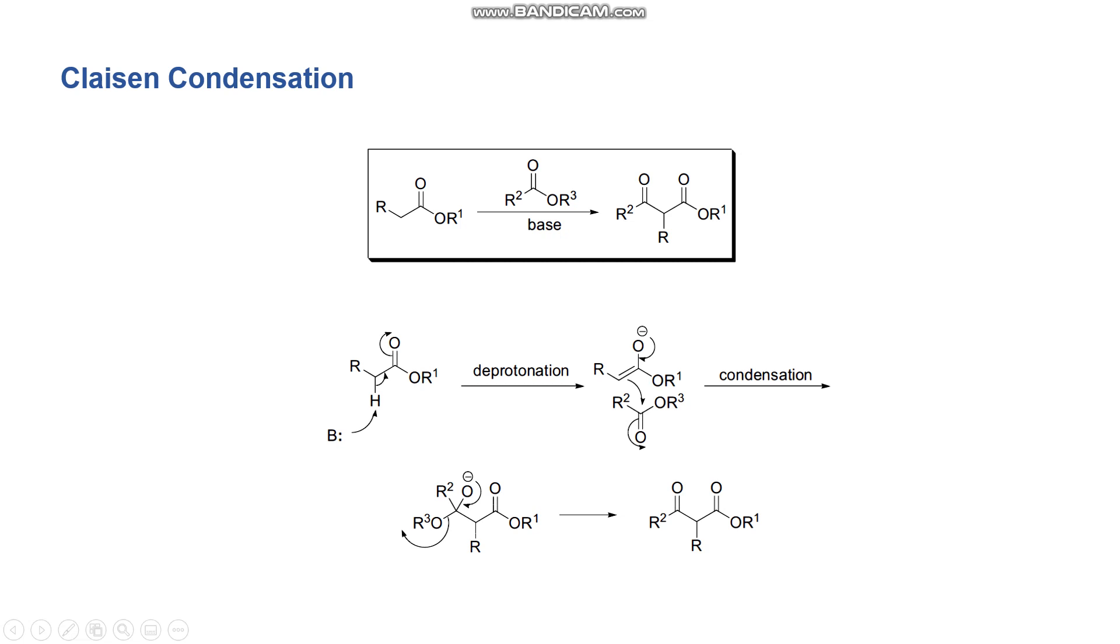The third example is Claisen condensation, which has the same mechanism as benzoin but is a base-catalyzed condensation of esters to afford beta-keto esters. The mechanism involves deprotonation and the enolate ion will attack the ester.